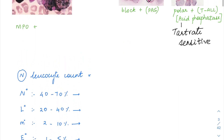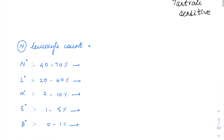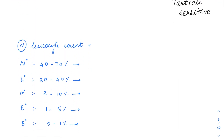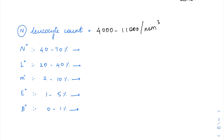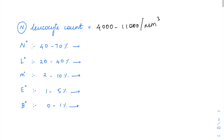Now, let us see what is the normal leukocyte count. The normal leukocyte count is 4,000 to 11,000 per millimetre cube. Of this, 40 to 70% are neutrophils, 20 to 40% are lymphocytes, 2 to 10% are monocytes, 1 to 5% are eosinophils, and 0 to 1% are basophils.